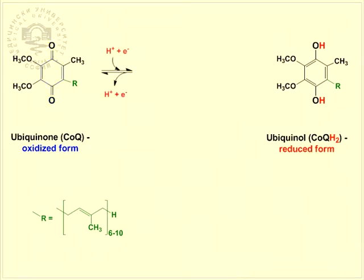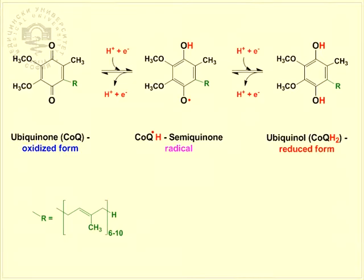The redox system quinone-quinol transfers two protons and two electrons, but this occurs consecutively through a partially reduced semi-quinone which is a stable free radical.